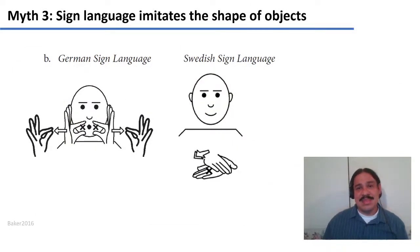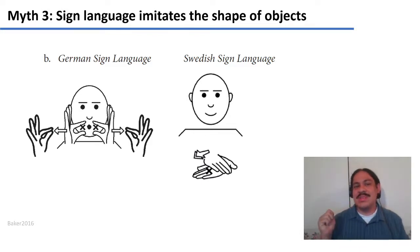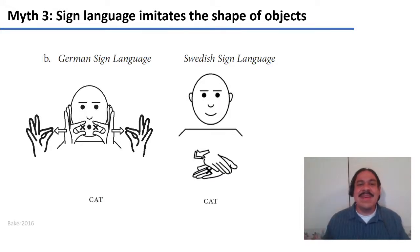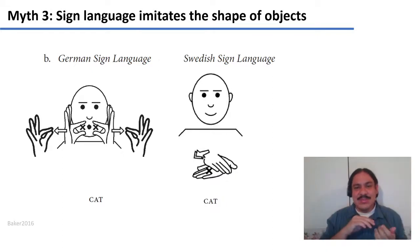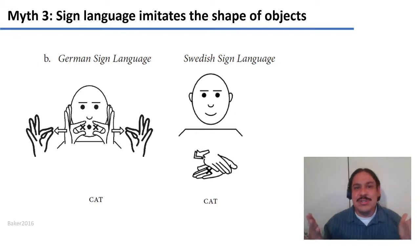A third myth about sign languages is that they're just mimicking or pantomimes of objects. This is not true. Take a look at these signs — they are iconic, meaning they're supposed to imitate the shape of something in the real world. But what are they imitating? They both mean the same thing. They mean 'cat.' The German Sign Language imitates the whiskers, expanding them. The Swedish Sign Language imitates the action of petting. But you can understand what they mean only in retrospect — they are inspired by some aspect of the physical world, but they're not really imitations of what a cat is.